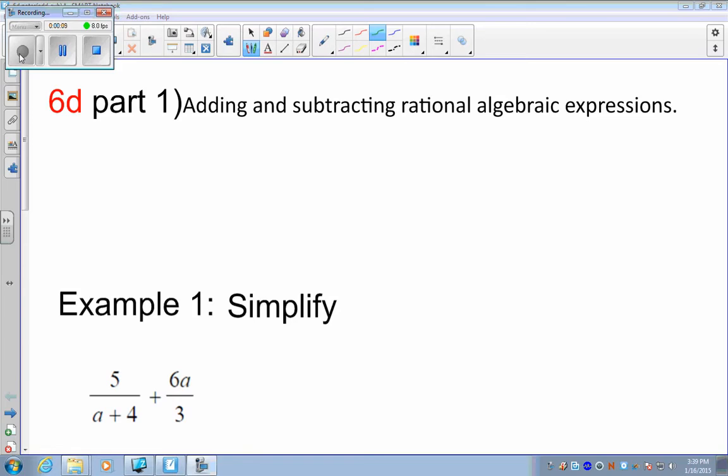You're using the same concepts you did with adding and subtracting fractions like you did 5-6 years ago. Let's start off with a quick, easy example of something you did in the past. 2 thirds plus 5 18ths. You can't add these. They don't have like bases yet. So you have to make them have like bases.